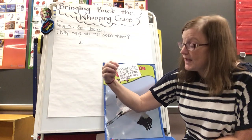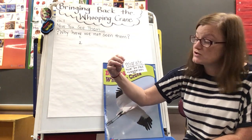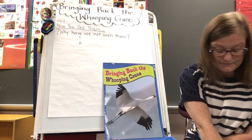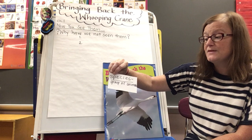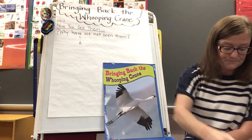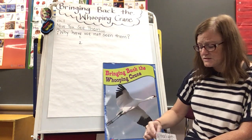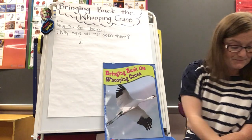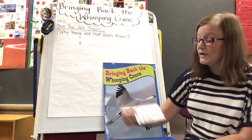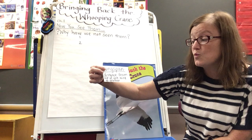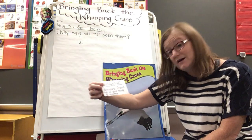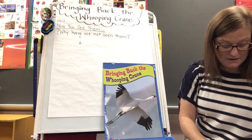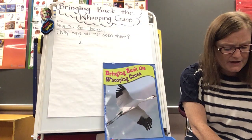The next word is 'migrate,' and when something migrates it's traveling from one place to another place every year. The next word is 'species,' and that is a group of animals that are the same. The next word is 'ultralight,' which is a type of small aircraft. And 'wingspan' is the distance from the tip of one wing to another wing — so when a bird spreads its wings, that is its wingspan.